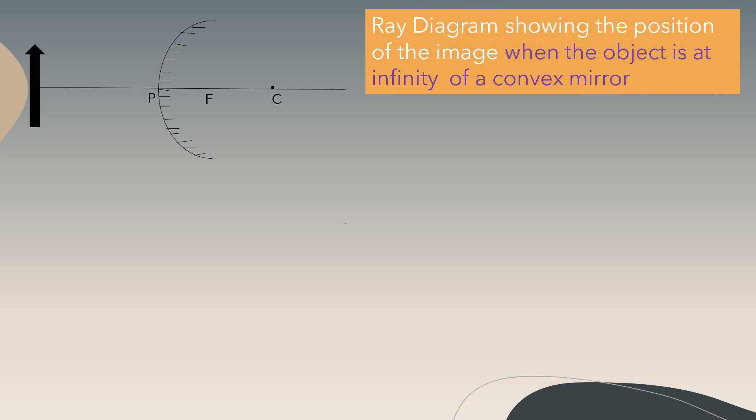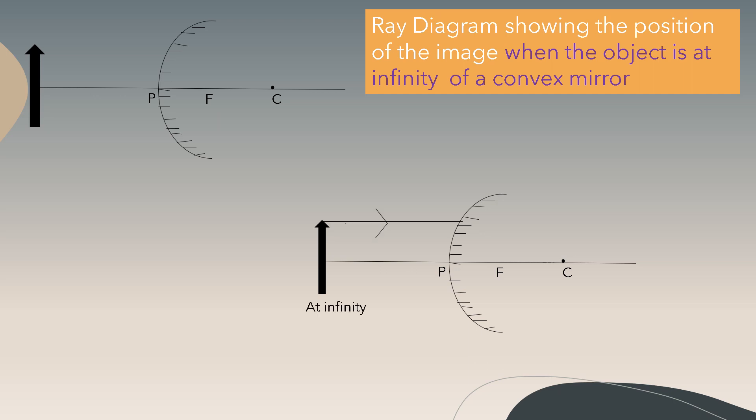Next, the ray diagram showing the position of the image when the object is at infinity of a convex mirror. When the object is at infinity, the ray parallel to the principal axis diverges and the extension is made to the focus. The point of intersection is at the focus, so the image is formed at the focus and is behind the mirror.